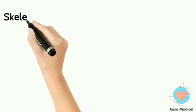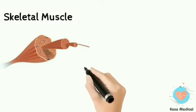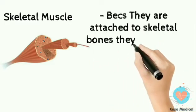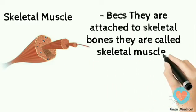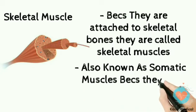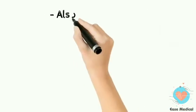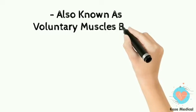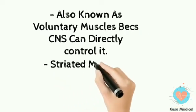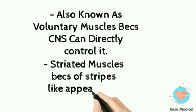First, we talk about skeletal muscle. Since they are attached to skeletal bones, they are known as skeletal muscle. Also known as somatic muscle because they are present in the body wall as well as in limbs. Also known as voluntary muscle because the CNS — central nervous system — can directly control it.